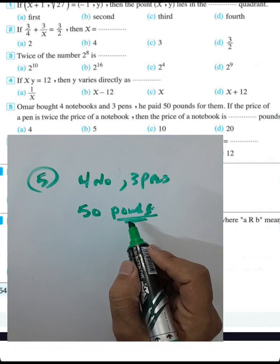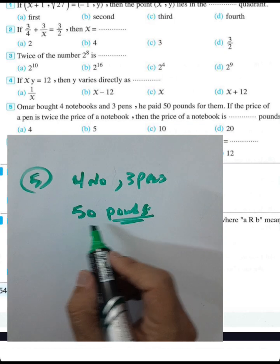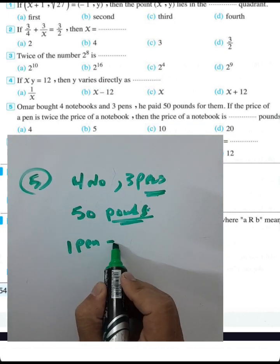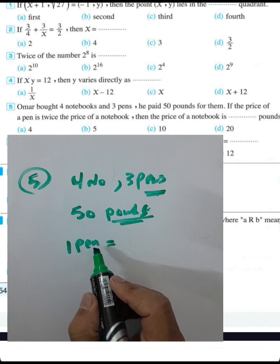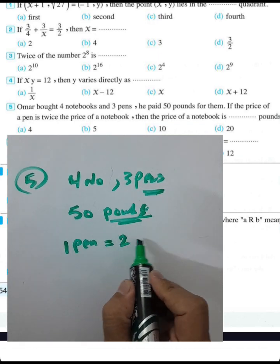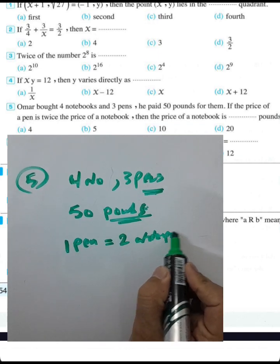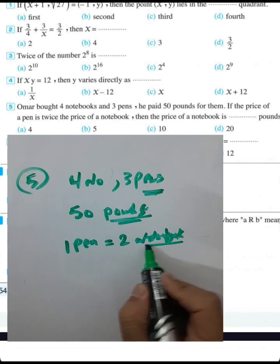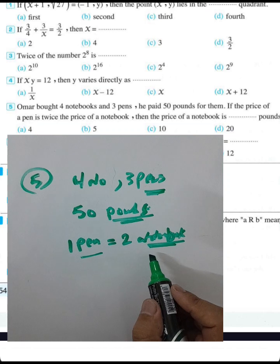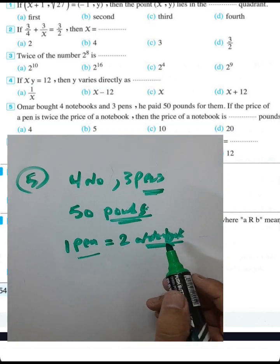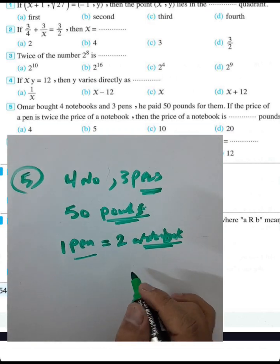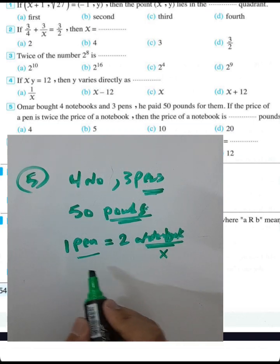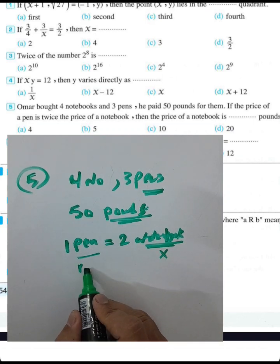If the price of one pen is twice the price of a notebook, let the price of a notebook be x. Then the price of one pen will be 2x.